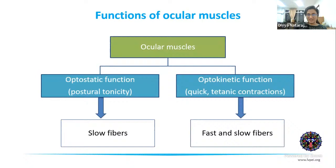Slow fibers are more involved in optostatic function — fixating the eye on a particular object or maintaining eccentric or primary gaze. Optokinetic function involves both fast and slow fibers for quick versional movement. In any saccade both fast and slow fibers are involved, while in smooth pursuit the slow fibers are predominantly involved.